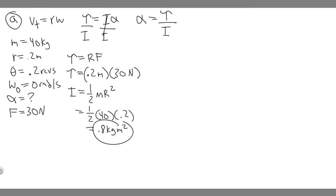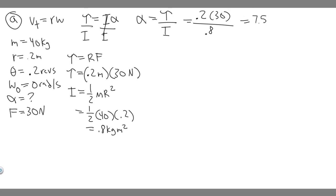Now we can solve for alpha. We have torque = 0.2 × 30 divided by inertia = 0.8. Plugging into the calculator: 0.2 × 30 ÷ 0.8 gives alpha = 7.5 radians per second squared.